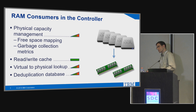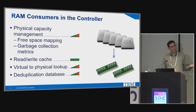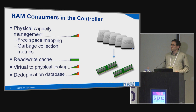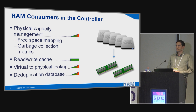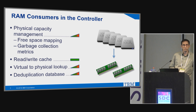For physical capacity management: more physical capacity means more RAM is needed to manage it. Read-write cache is more workload-dependent, so if we're not changing the workload, we could probably get away with the same amount of RAM. Virtual-to-physical lookup, however, means more physical and virtual capacity requires more metadata. The deduplication database is a factor of virtual capacity — so its size is going to increase just by increasing the amount of storage, without even changing our workload.